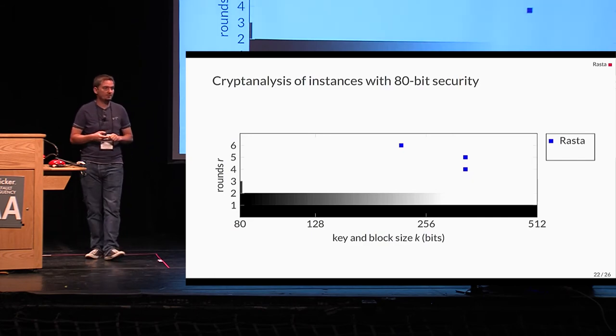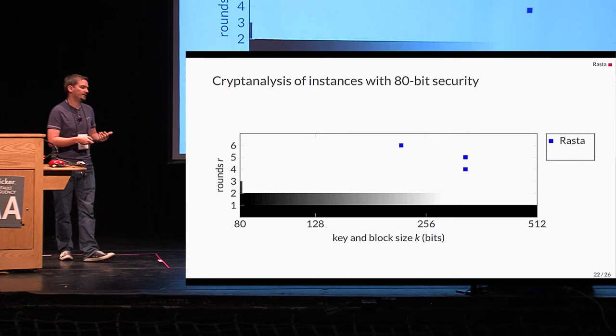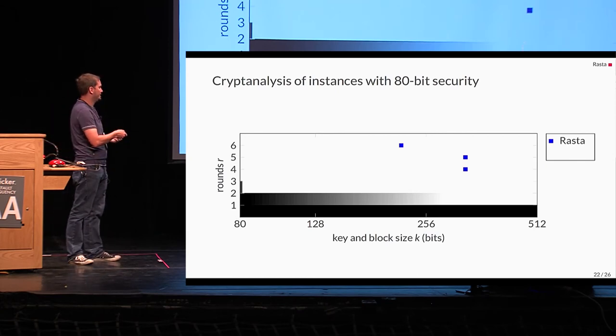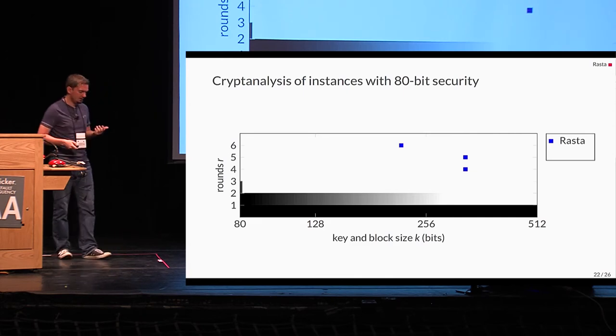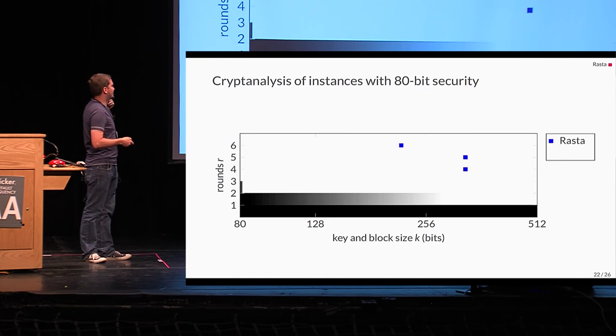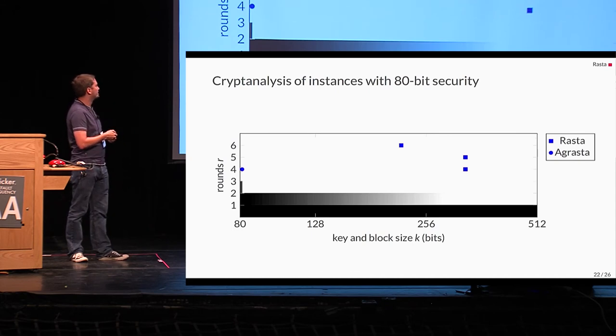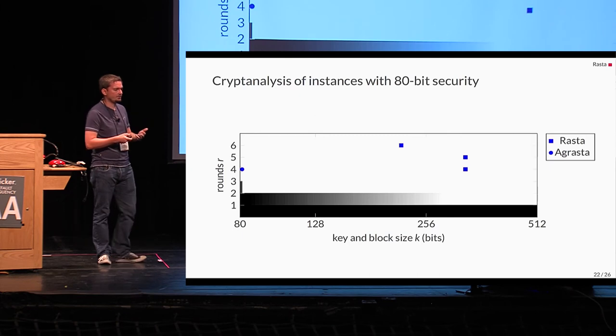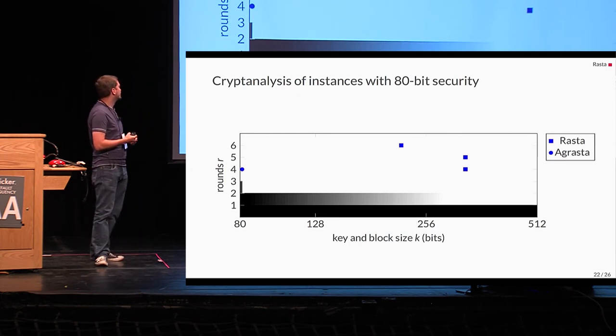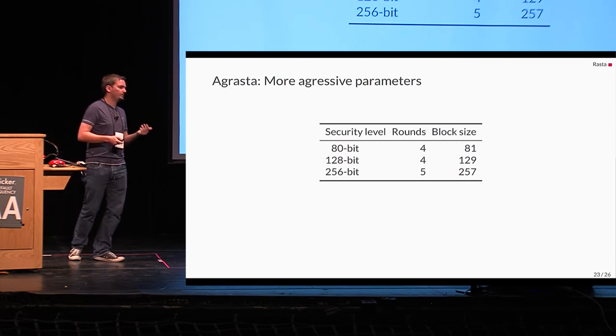So, as I've mentioned, we consider Rasta to be very conservative. The main reason is that I've colored here the parameter sets that we can actually attack for Rasta, and here are the chosen parameters of Rasta. And as you can see in this figure, there's quite some distance to the attackable area. And for this reason, we have also defined Agrasta, which is just based on the best attacks we have, plus one round. So, this is Agrasta here, and this should serve as a kind of challenge for future cryptanalysis, basically, to see if they can break even more rounds than we can.